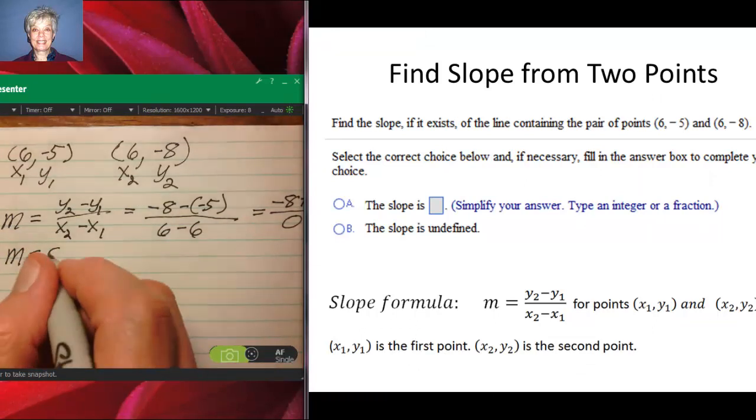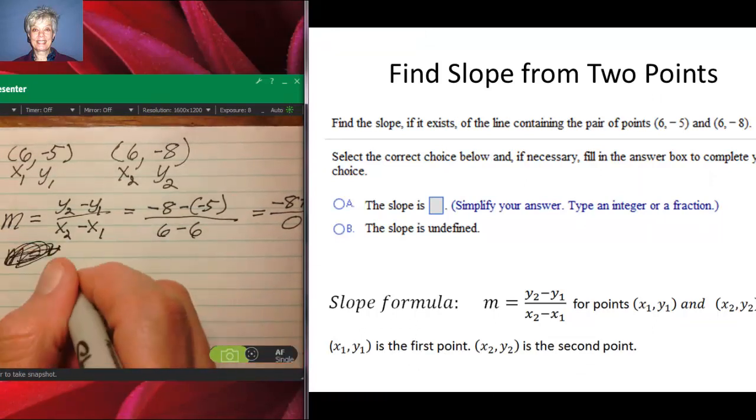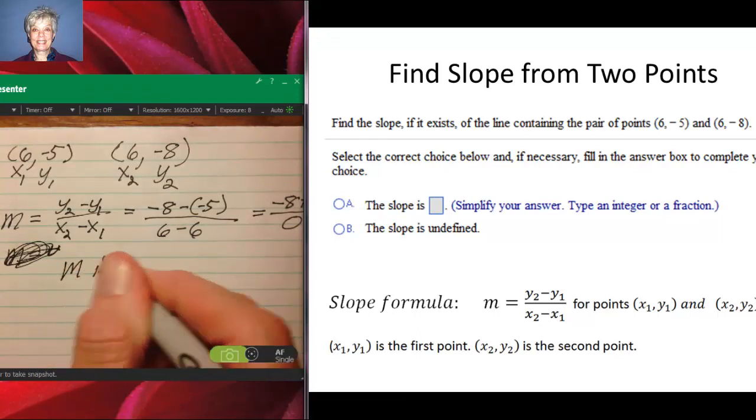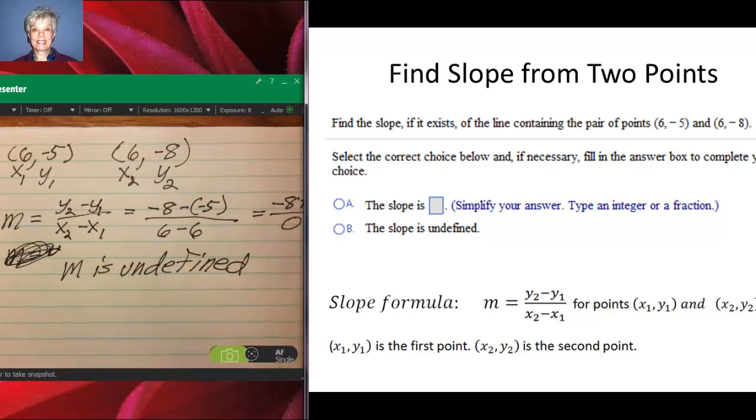So—no, I almost wrote 0. No, no. And you don't even say m equals; I would say m is undefined. You might also see possibly a choice that would say 'no slope,' and an undefined slope, like we said before, is no slope. Okay, thank you very much.